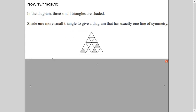So let's begin with the topic. Three small triangles. So this picture is given to you here. This diagram is given to you here. And you have to shade one more small triangle in this one so that the diagram has exactly one line of symmetry.